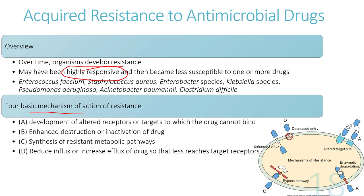Mechanism A involves the point of entry of the drug into the cell. Bacteria can change the target site or receptors so the drug cannot bind to them, and if the drug can't bind, it is unable to have an effect.